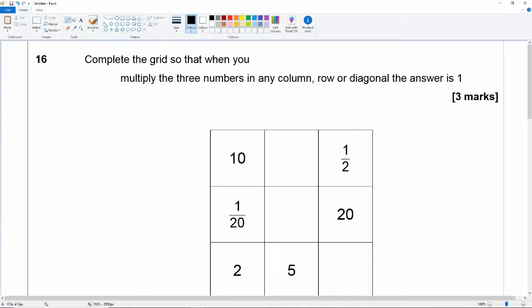So 10 times something times a half is equal to 1. Well 10 times a half is equal to 5. So if I put 1 fifth here then 5 divided by 5 is 1. So that works.